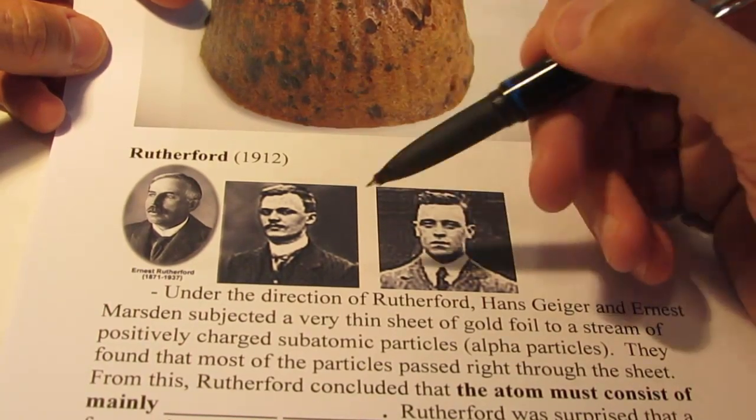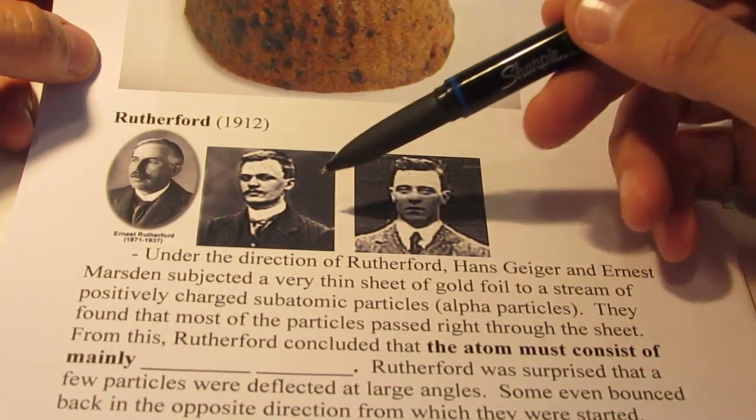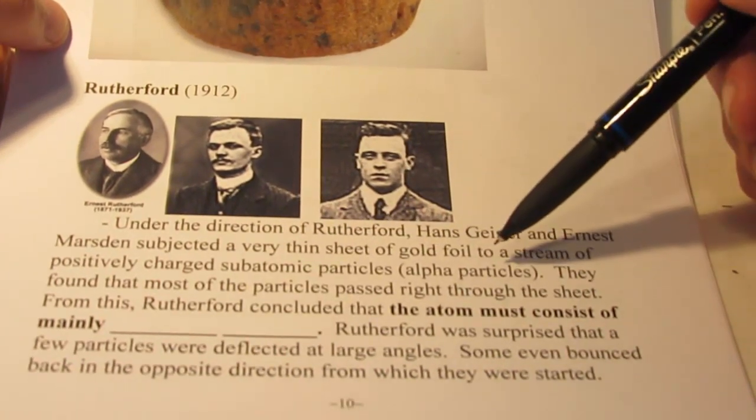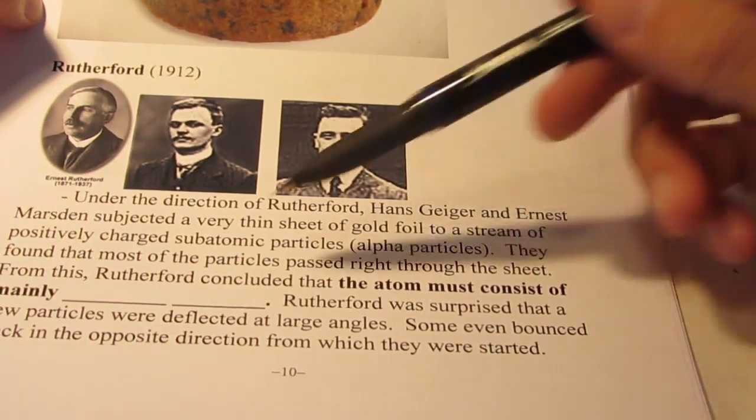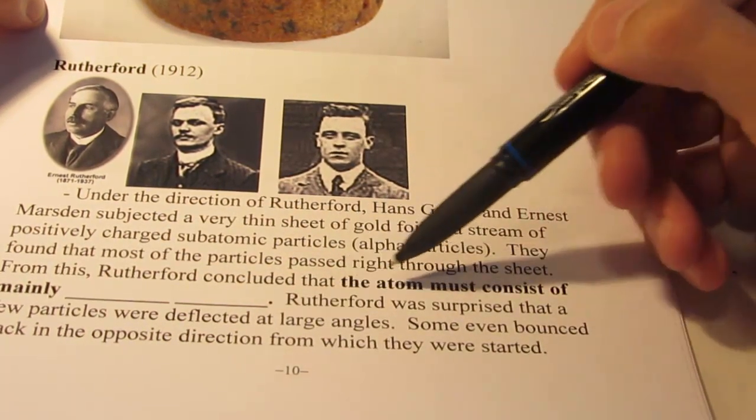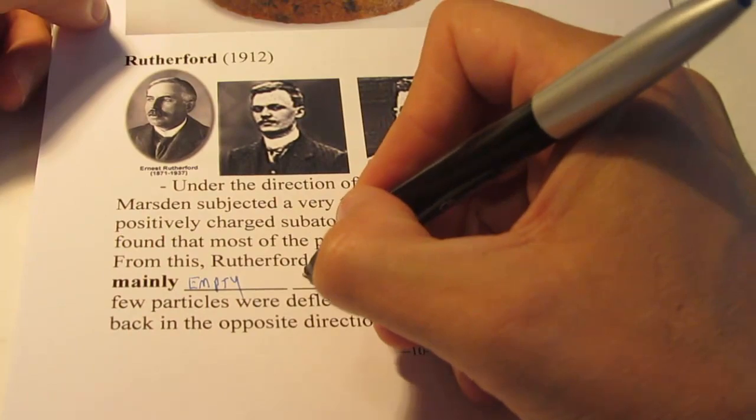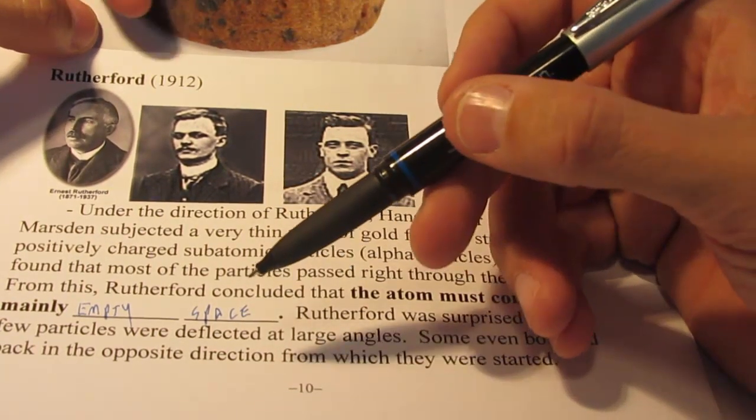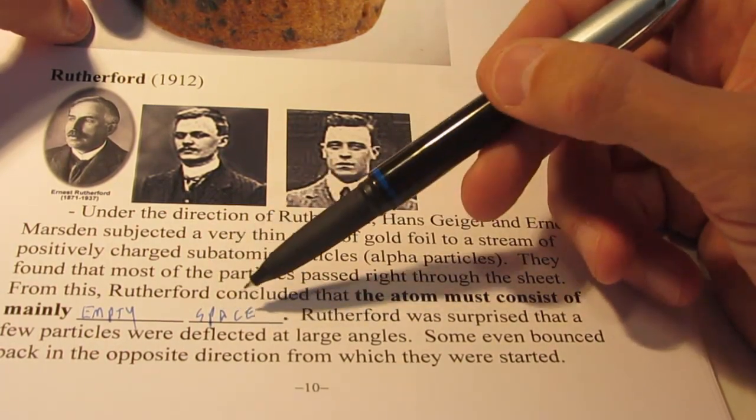Then, Ernest Rutherford came around. He happened to be a student of J.J. Thompson. He also had himself two students, Hans Geiger and Ernest Marsden. What they did is they subjected a very thin sheet of gold foil to a stream of positively charged subatomic particles. These are known as alpha particles. They found that most of the particles passed right through the sheet. From this, Rutherford concluded that the atom must consist mainly of empty space.